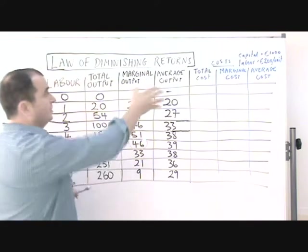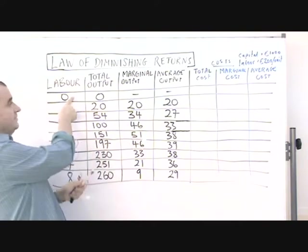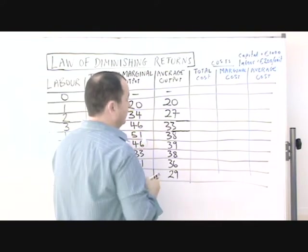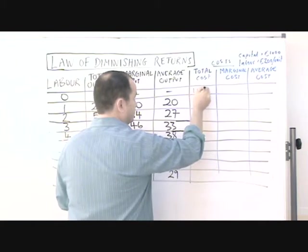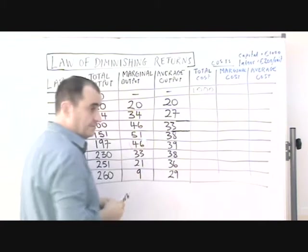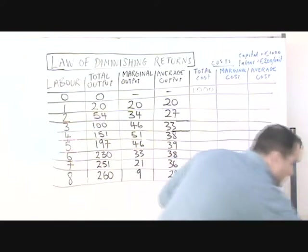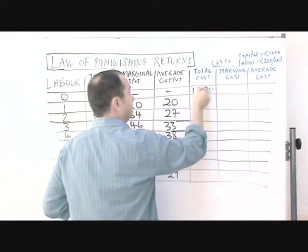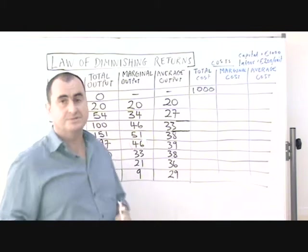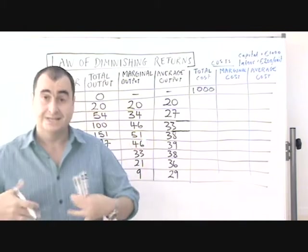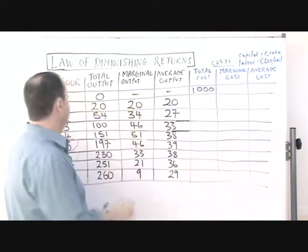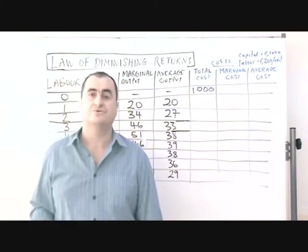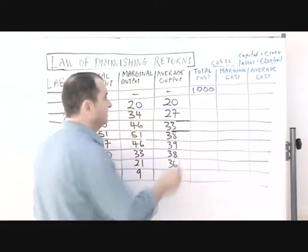So the total cost for this firm when they have no labour must be 1000 — which is all the capital and land costs, there are no labour costs. Every time they add another worker, the total costs will be rising by 200. We've said that's the cost of a unit of labour.